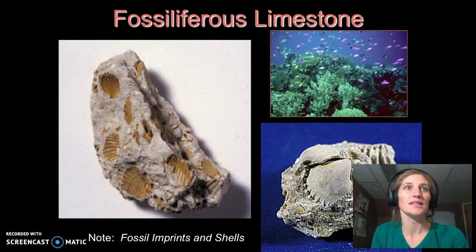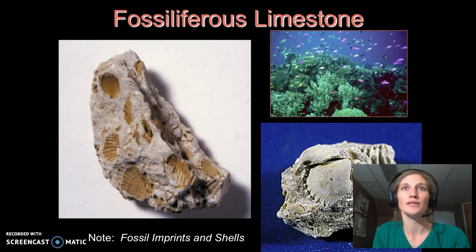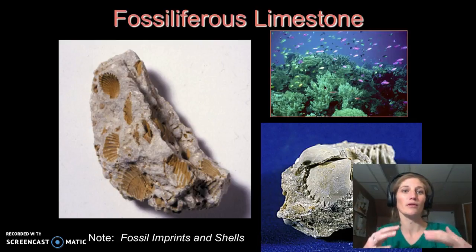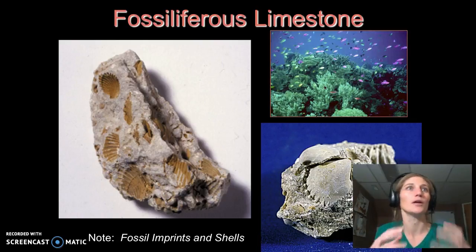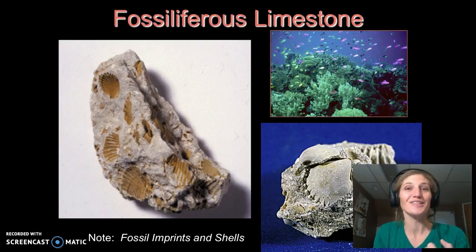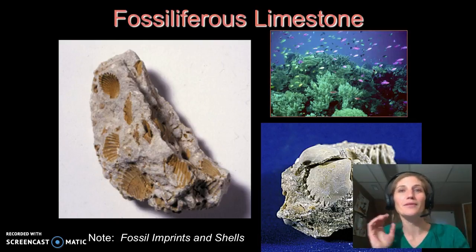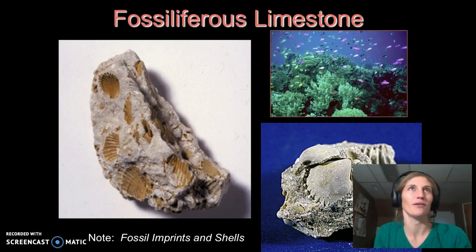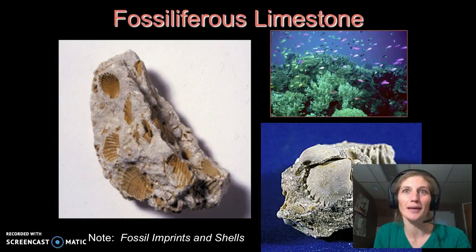Fossiliferous limestone is formed from the shells of marine organisms — clam shells, brachiopods, corals. Looking at a nice coral reef here, if we could bury this reef, it would form and create a fossiliferous limestone. When we see those fossils, it tells us a lot about who was living at what time — it gives us an idea of marine, warm, shallow water environments. Think the Bahamas — that gives us a sense of where those fossil limestones are forming.